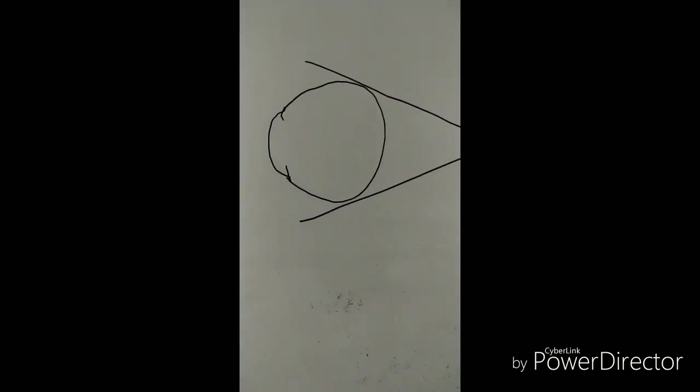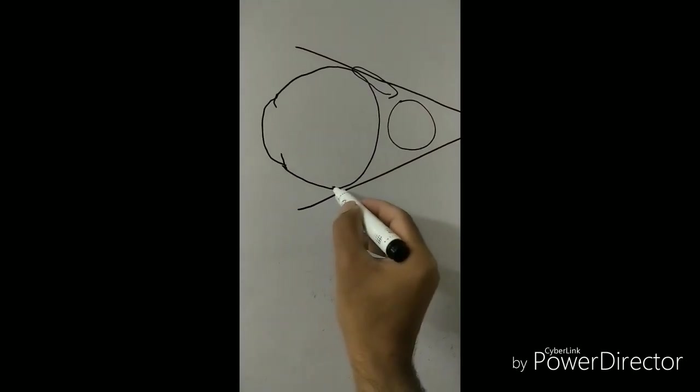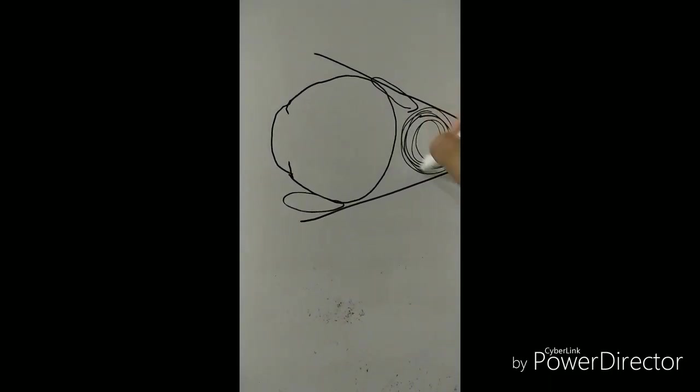Now that closed space has got extraocular muscles, optic nerve, orbital fats, a lot of blood vessels, nerves going on. So if there is any extrinsic mass and that is enlarging, it will push the globe outward and cause proptosis.